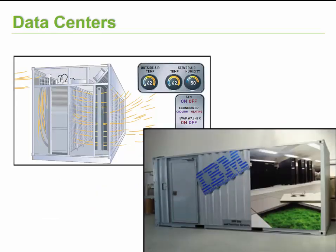What many companies do nowadays is take old shipping containers and build mainframes and computing resources within those containers. The container will include the HVAC system as well as all the computers, servers, and everything. If they want to add additional resources, they can do so quickly by just linking up these different data centers to one another.